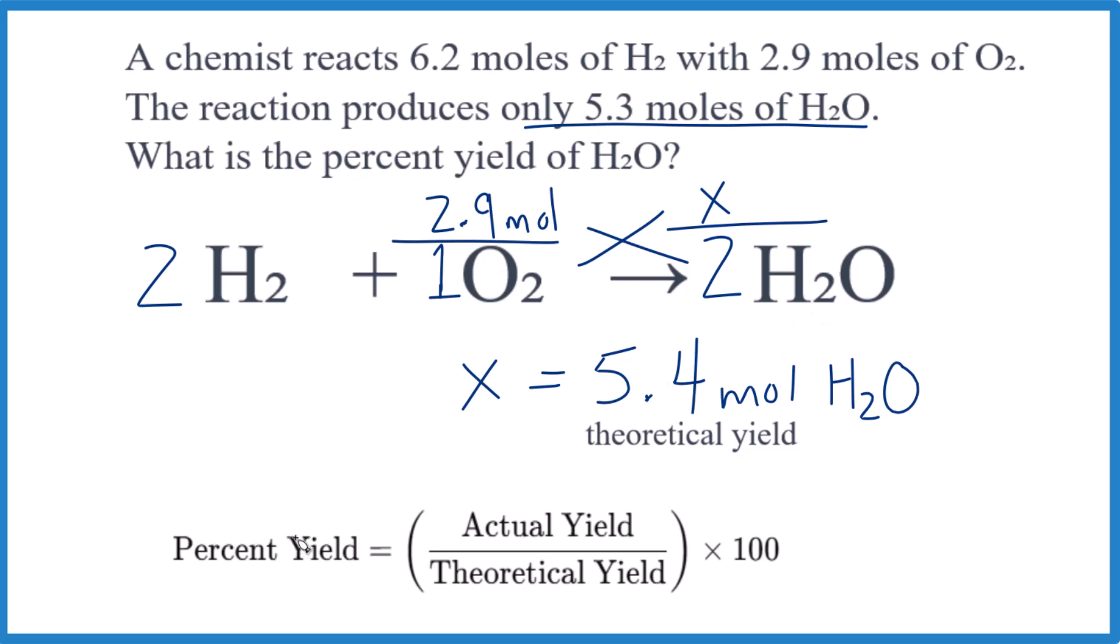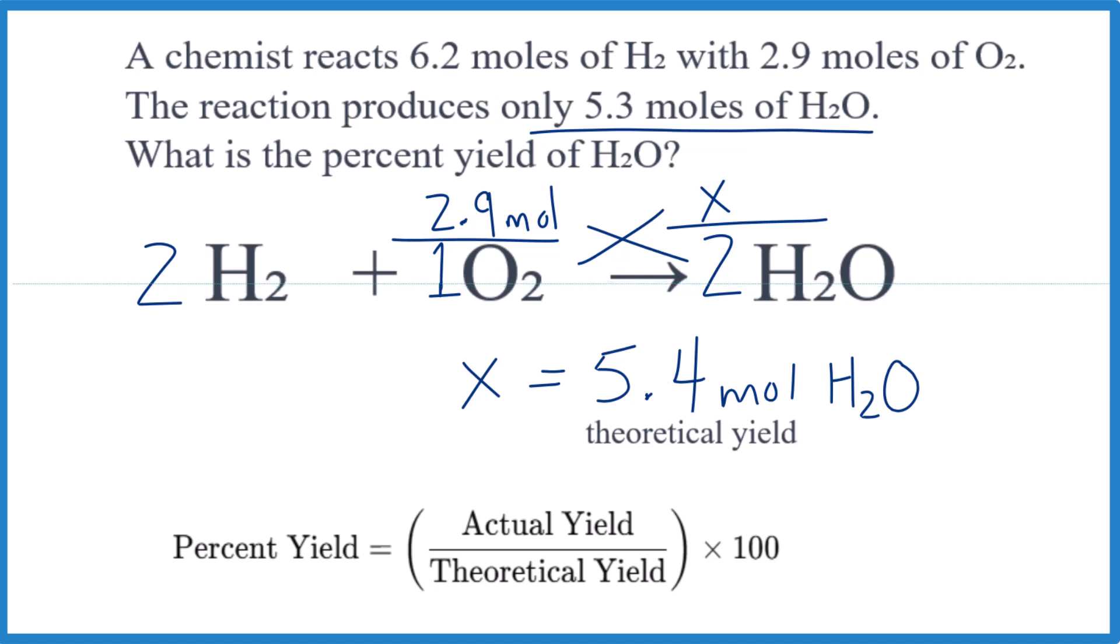So to calculate the percent yield, what we do, we take the actual yield, that 5.3 moles. That's the actual yield. And then the theoretical yield right here. So they'll give you the actual yield in the problem, and then you calculate the theoretical.